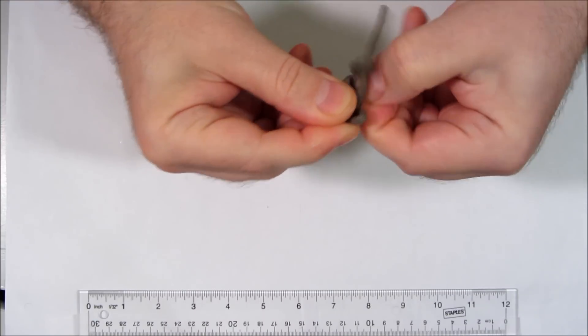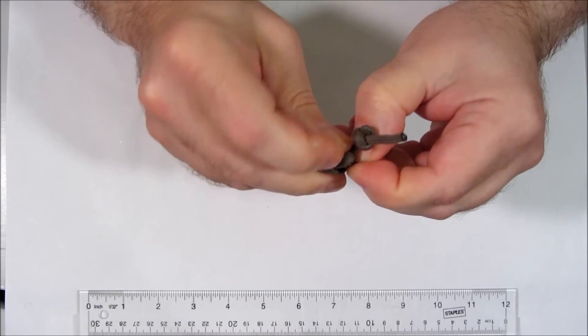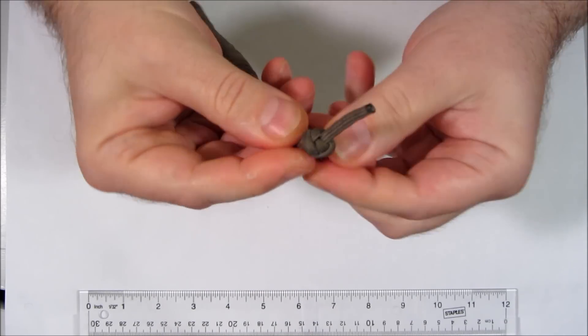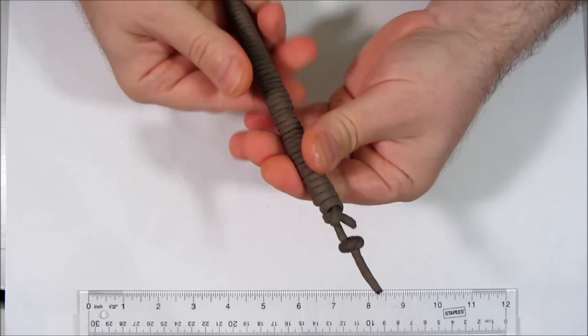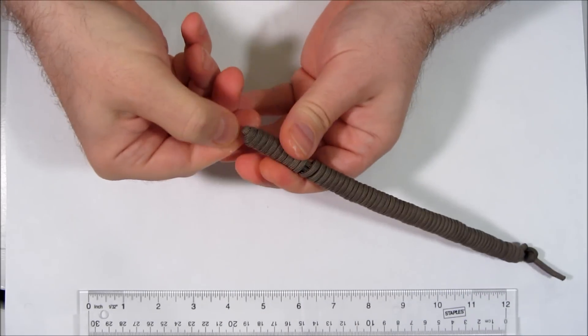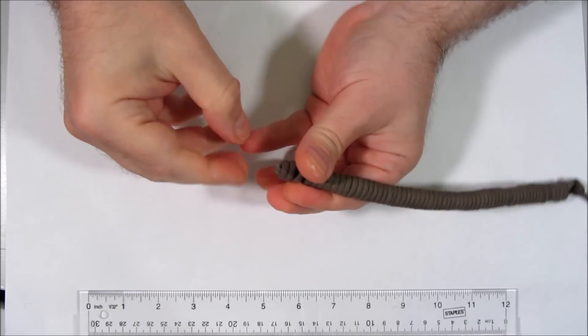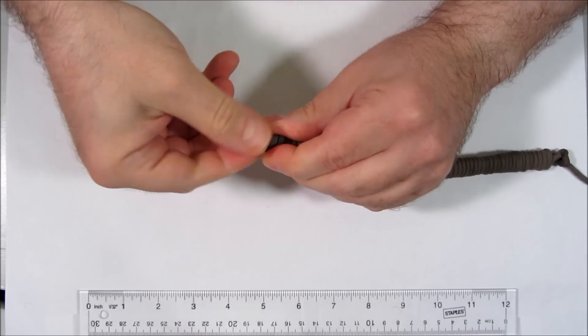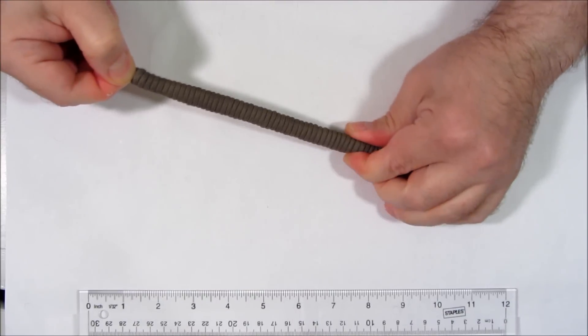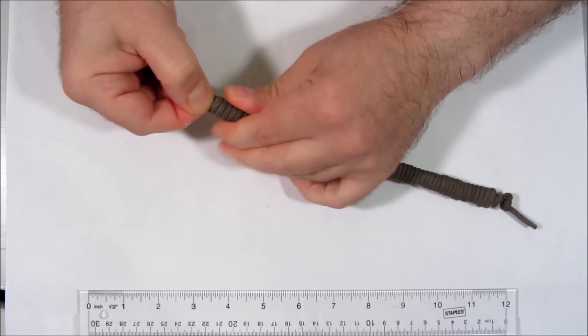Stick the tip end to the top loop. Now compress the coils in the other direction, bit by bit, keeps it even.